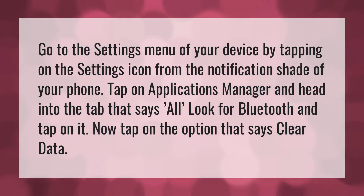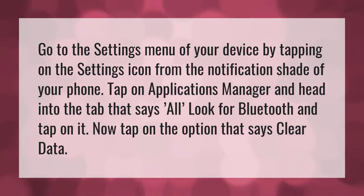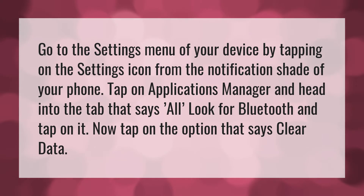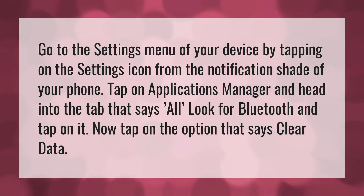Go to the settings menu of your device by tapping on the settings icon from the notification shade of your phone. Tap on applications manager and head into the tab that says all. Look for Bluetooth and tap on it. Now tap on the option that says clear data.